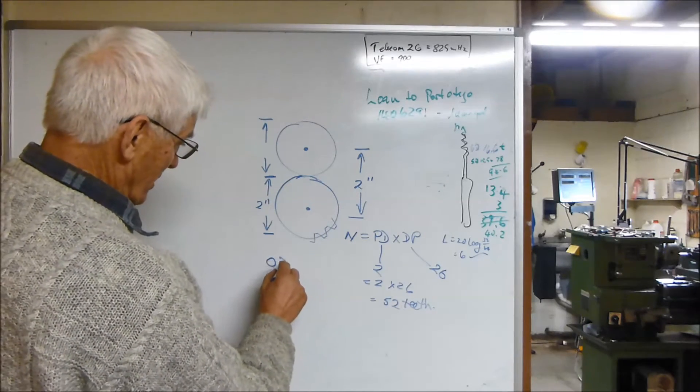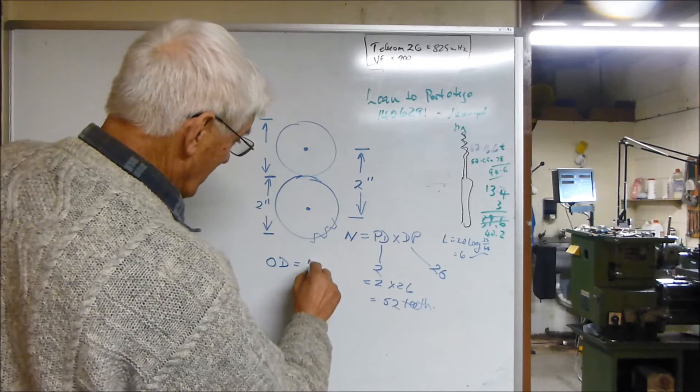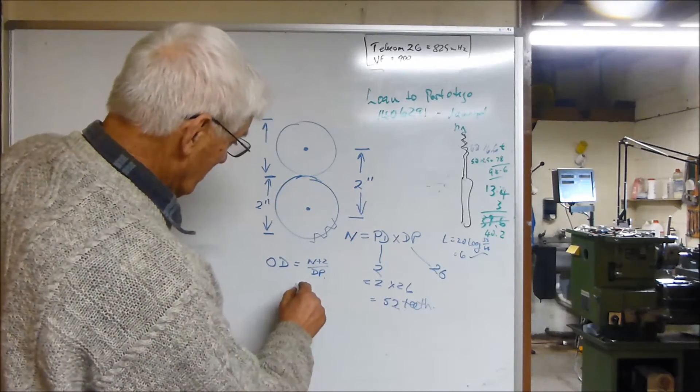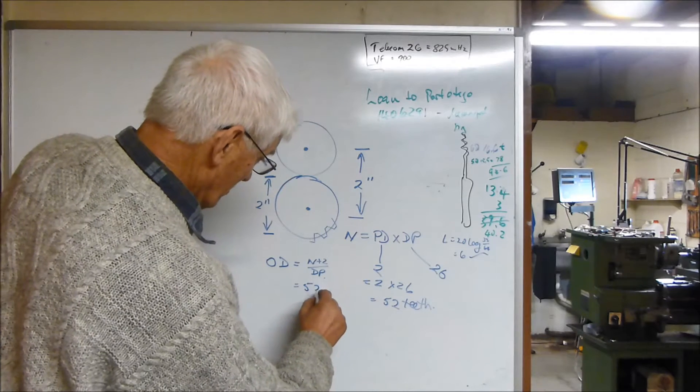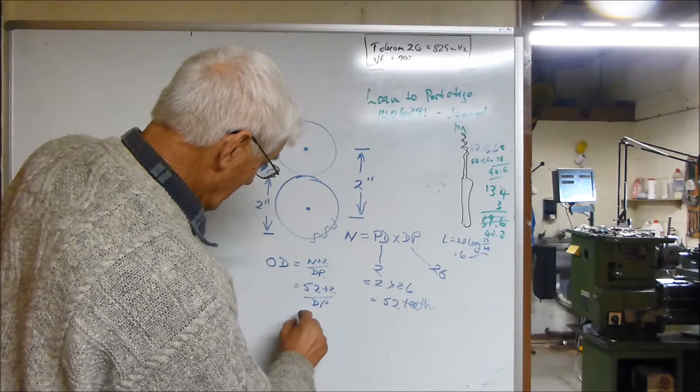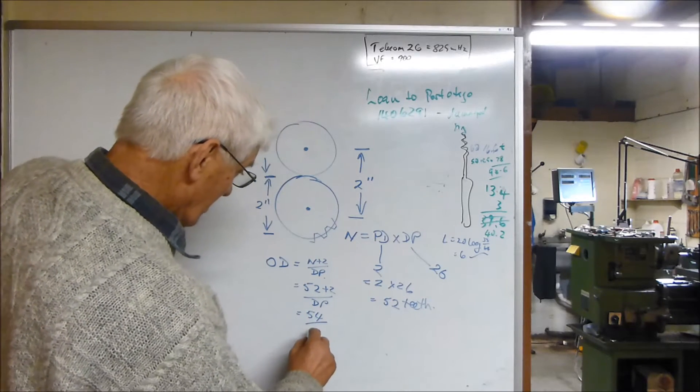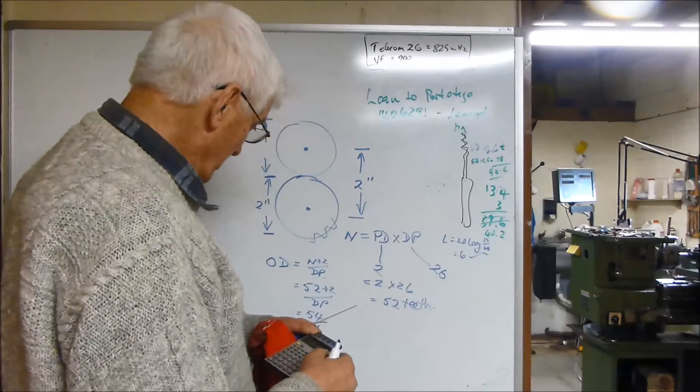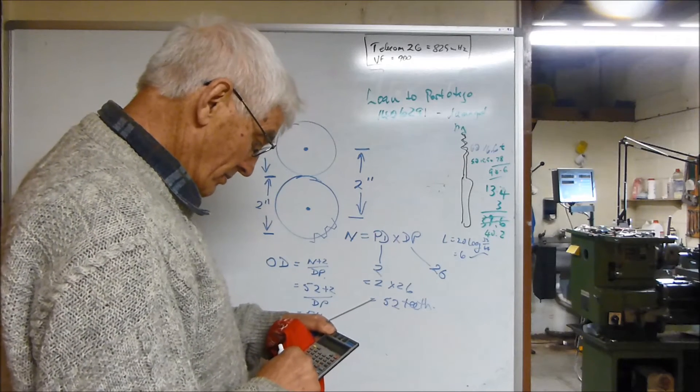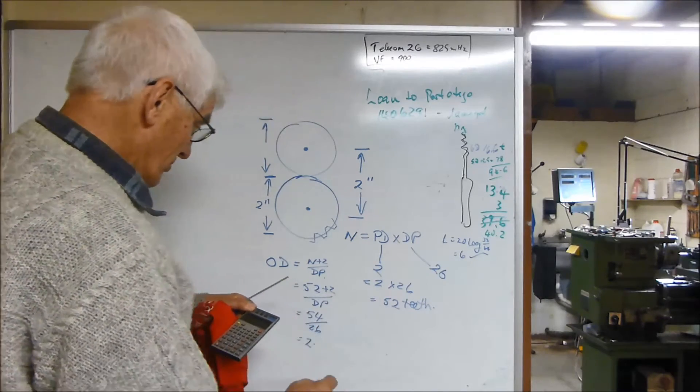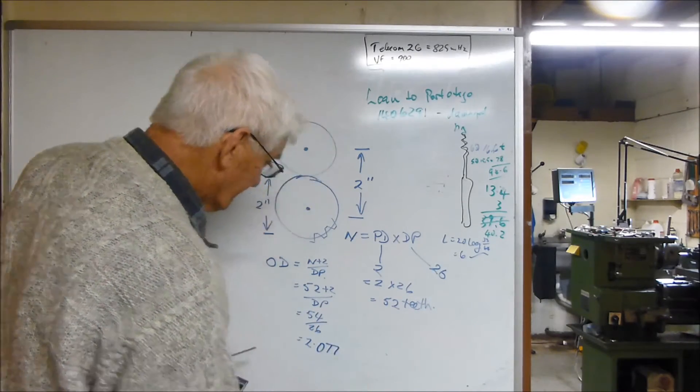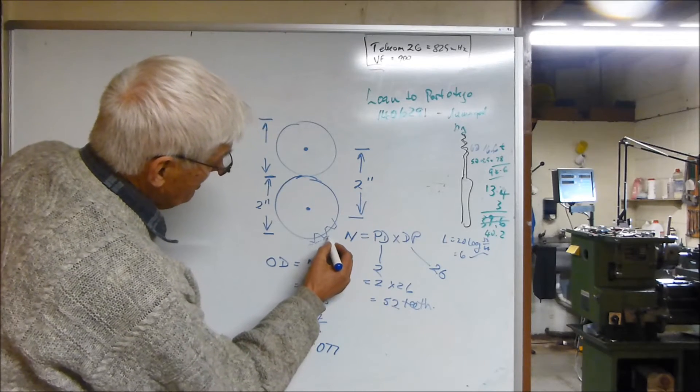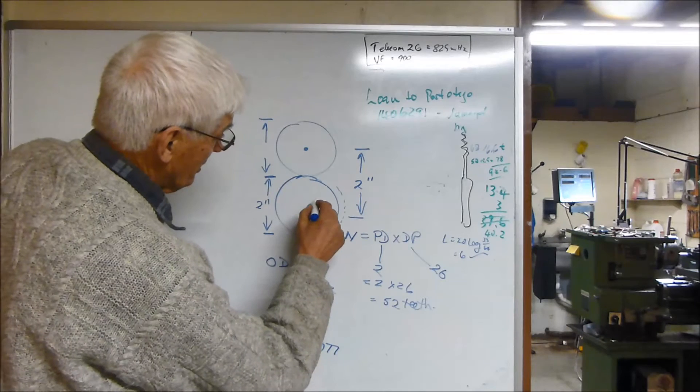The blank size OD is given by the formula N plus 2 over the DP, where N is the number of teeth. So that is equal to 52 plus 2 divided by DP, which is 54 over 26, which is 2.076 from memory. So I need to cut two blanks that have an outside diameter of 2.077.